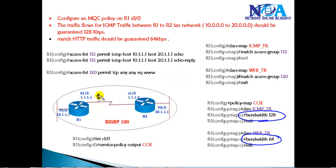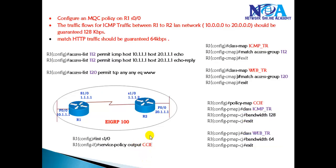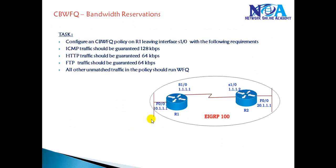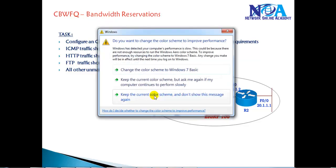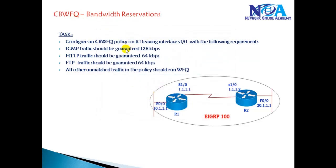The policy map is applied to the interface using 'service-policy output' followed by the policy name. This is the same lab we did in the basic classification examples, but now we are going to practically verify it with another example covering CBWFQ bandwidth reservations.